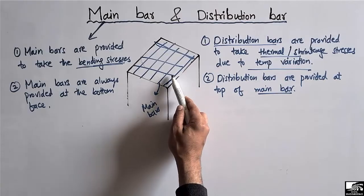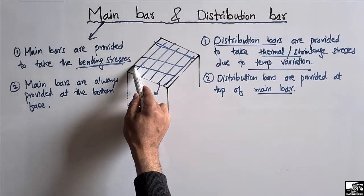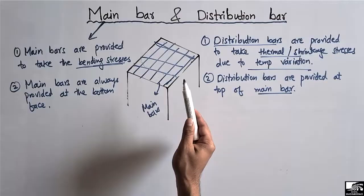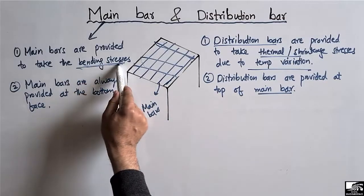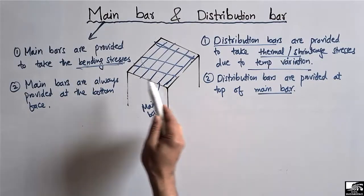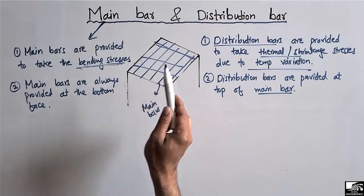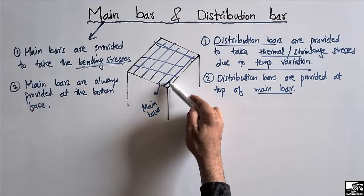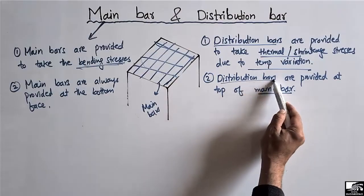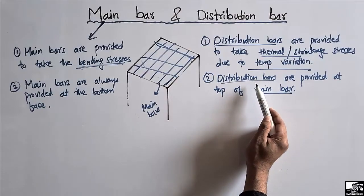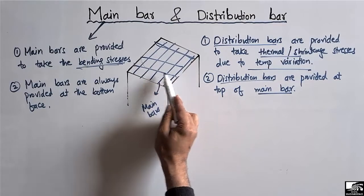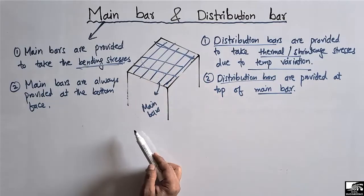Why do we provide the distribution bars on the top of the main bars? Because they are not going to take the main stresses, that is the bending stresses. We need to have more effective depth for the bending stresses, so that's why we provide the main bars below on the bottom face. The distribution bars don't need more effective depth, so we provide them on top of the main bars.